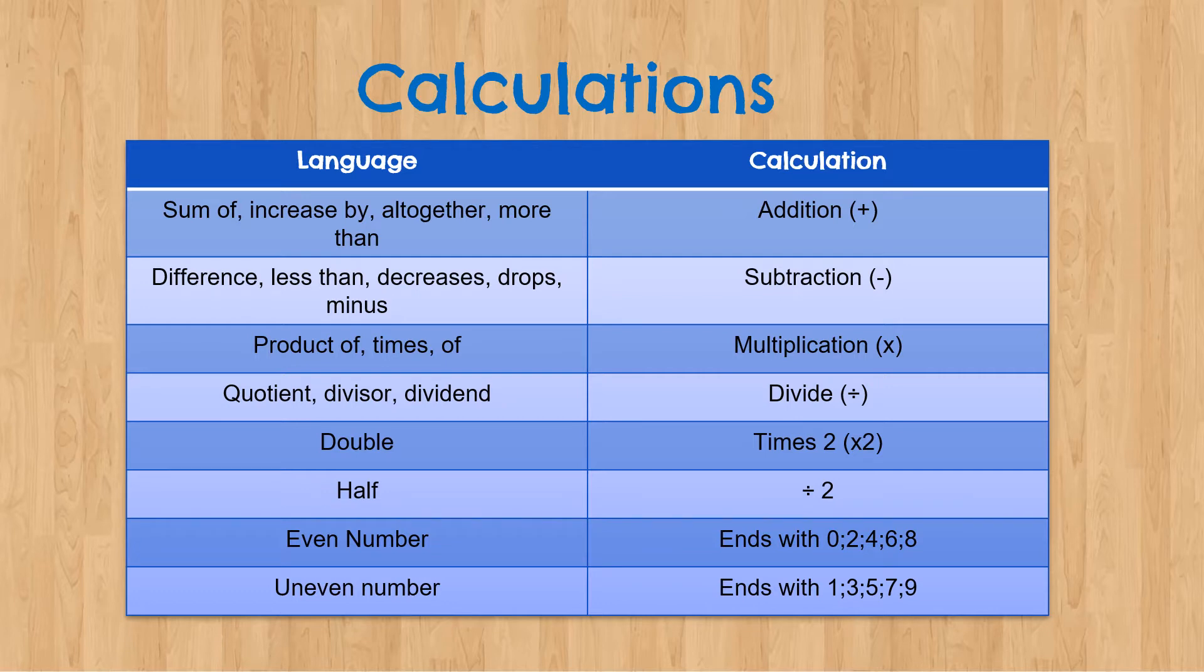It tells us we are going to work with addition. Difference, less than, decreases, drops and minus tells us that we will be using subtraction. Product of, times and of are all examples of multiplication. Quotient, divisor and dividend tells us that we are working with divide.